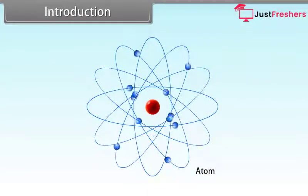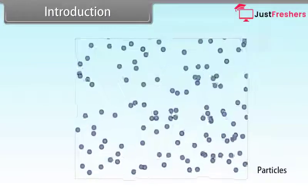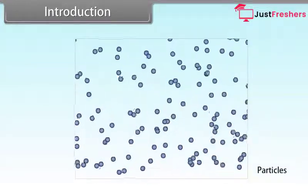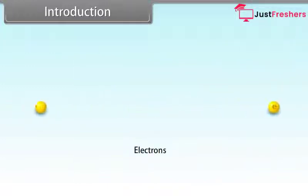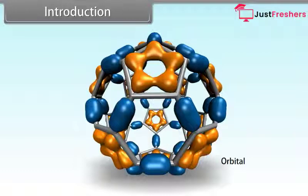Hey kids, today we will learn the quantum mechanical model of atom. Matter has dual behavior — wave as well as particle. Heisenberg's uncertainty principle is only applicable to small particles such as electrons. The region of the atom where the probability of finding an electron is maximum is called an orbital. Orbitals are characterized by a set of numbers known as quantum numbers. The energy, size, shape, and orientation of the electron orbital can be specified by three quantum numbers: principal quantum number, azimuthal quantum number, and magnetic quantum number.